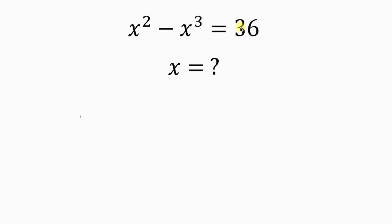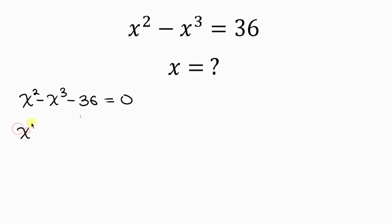Our first step will be to move 36 to the left-hand side, so that we have x squared minus x cubed. As 36 crosses to the left, it becomes minus 36, equal to 0. This simplifies into x squared minus x cubed minus 36, and we're going to break down 36 as 27 plus 9, equal to 0.